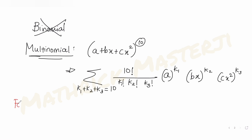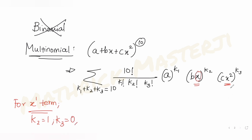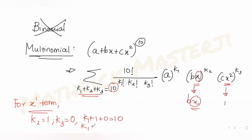For the x¹ term, x raised to 1 comes only from the (bx) factor. So k2 should be 1, and k3 should be 0 so we don't get an x² contribution. With k1 + 1 + 0 = 10, we get k1 = 9. So for the x¹ term, k1 = 9, k2 = 1, k3 = 0.